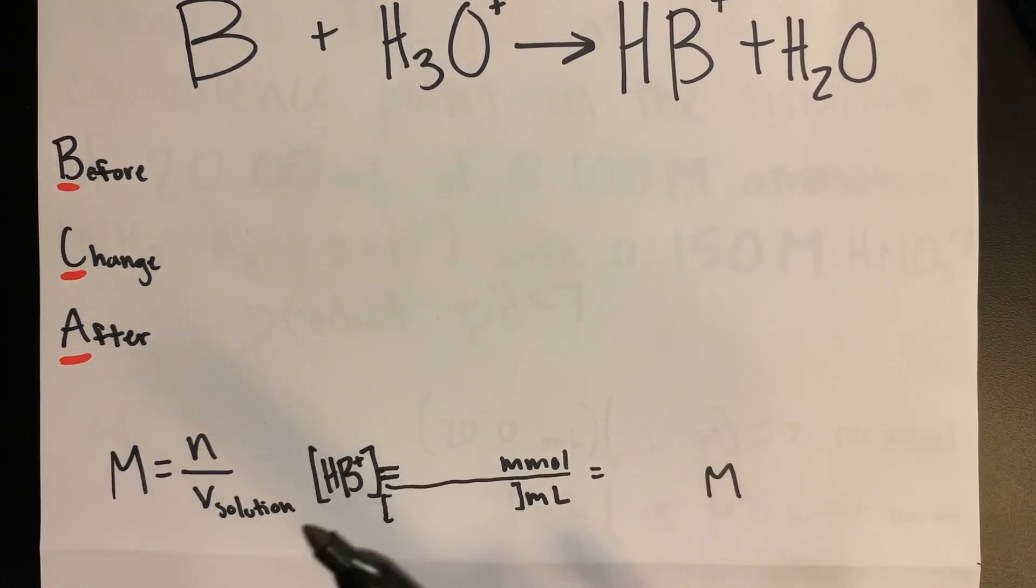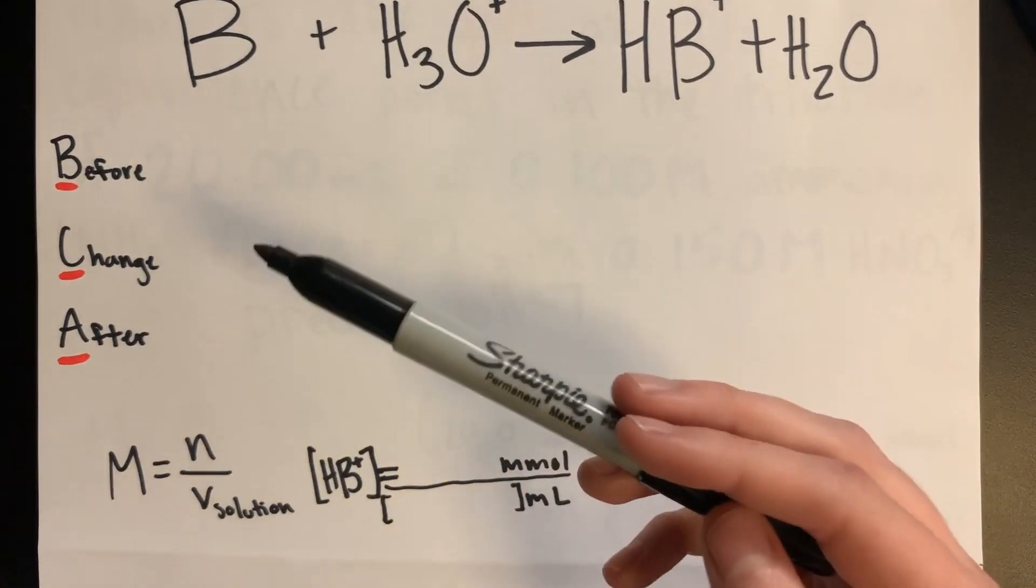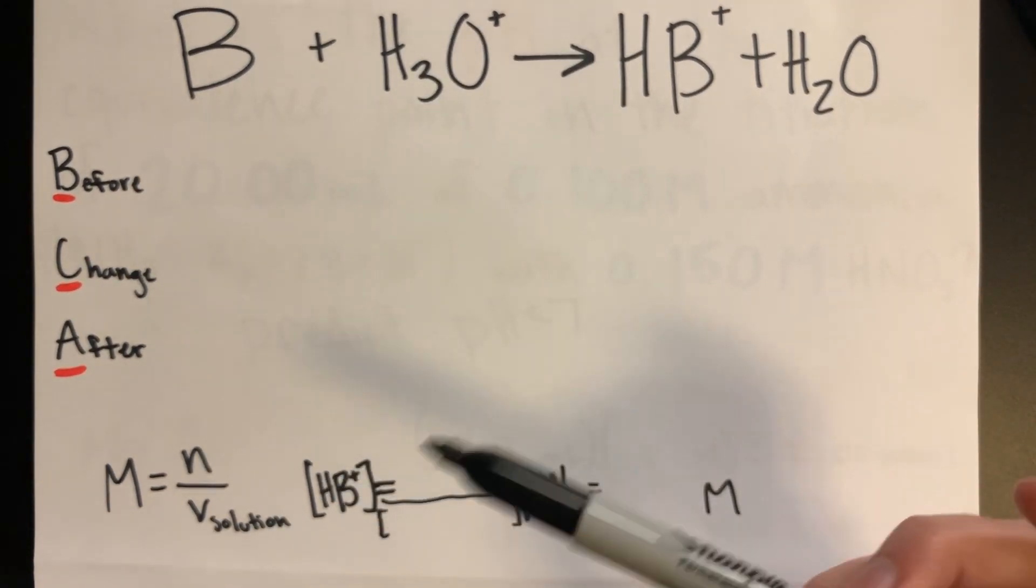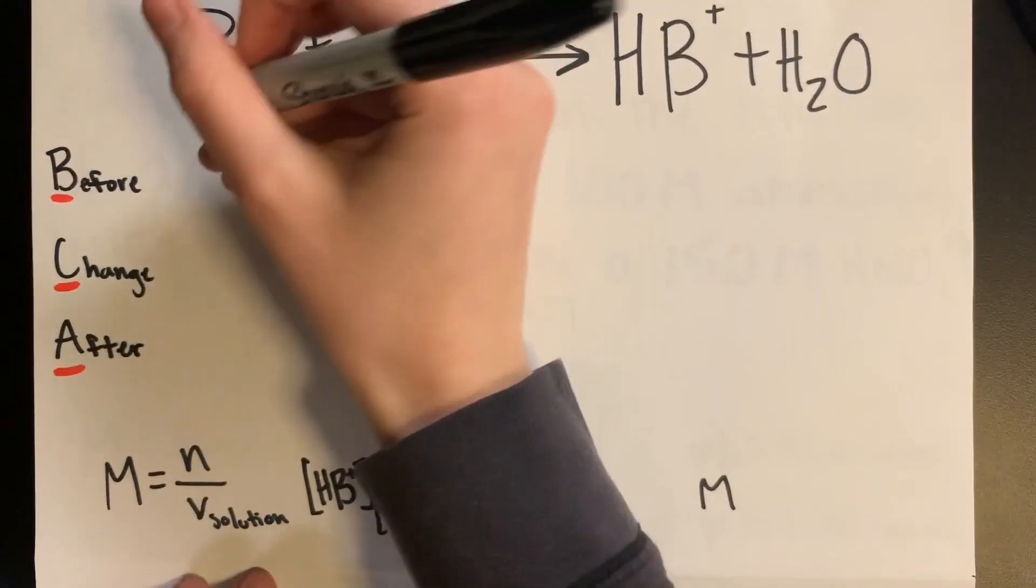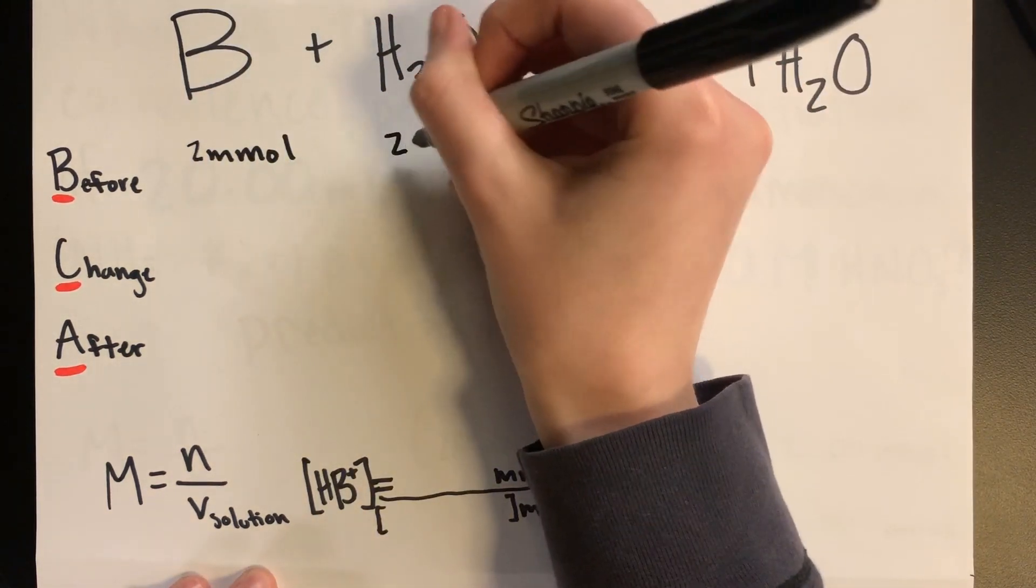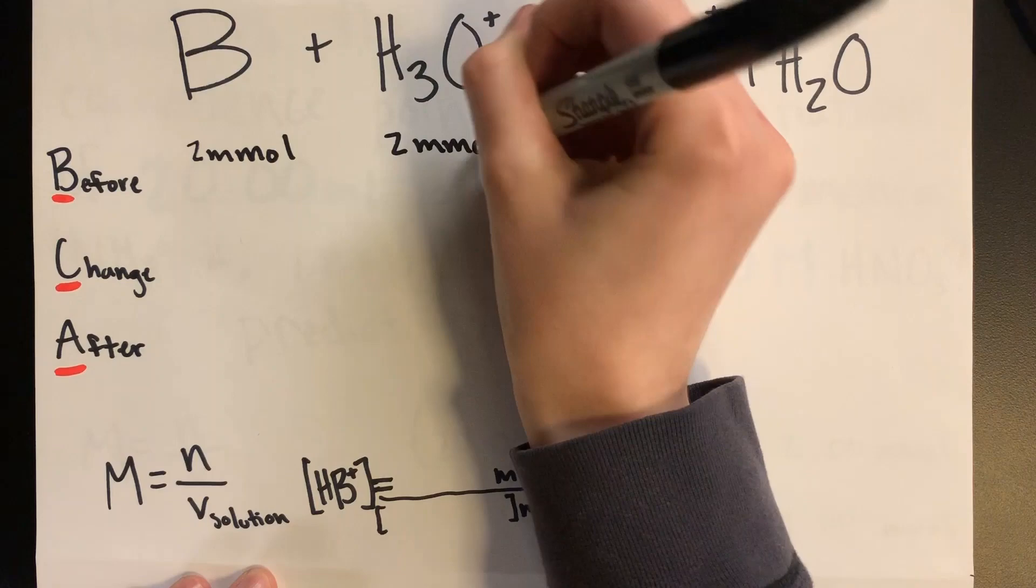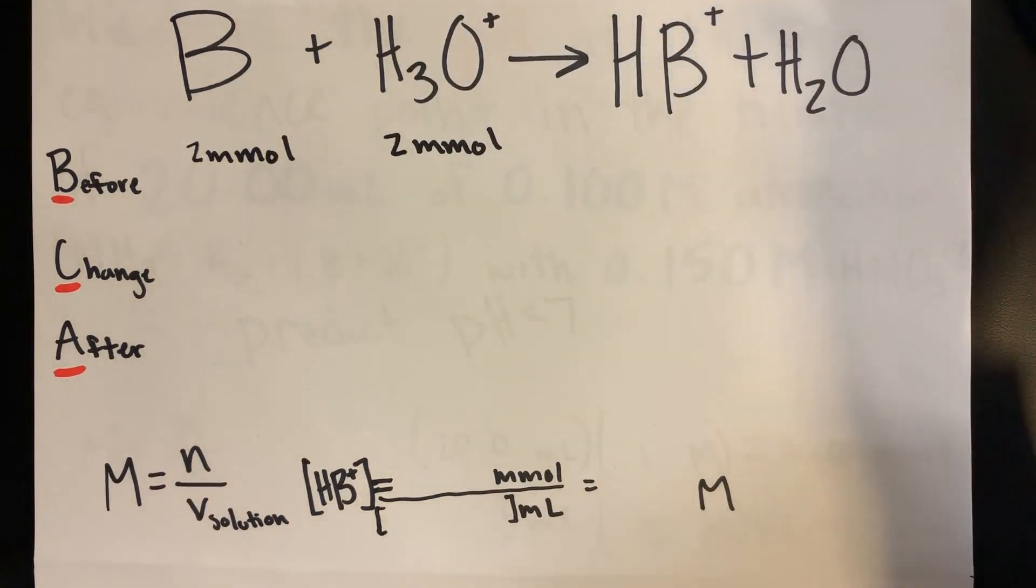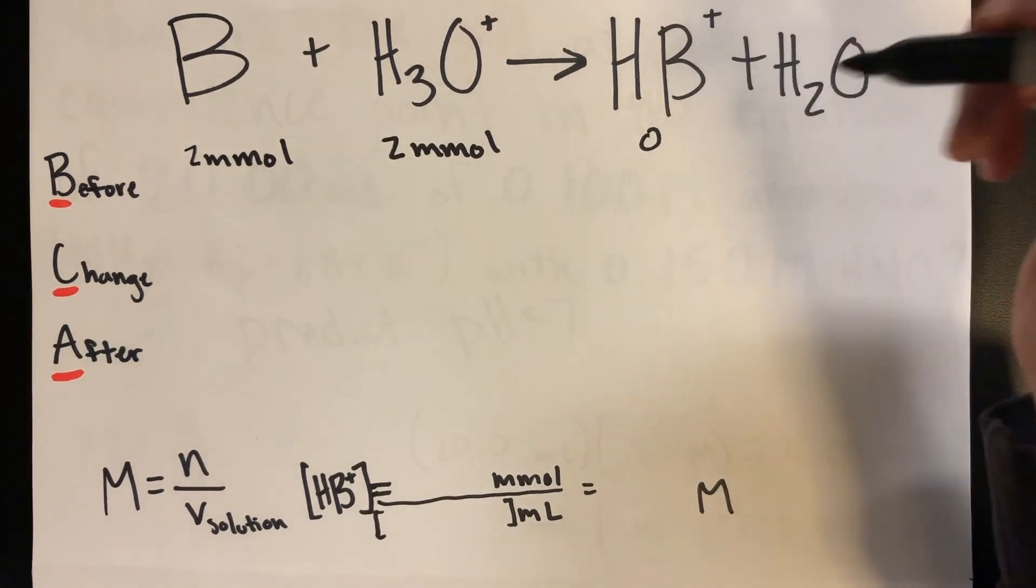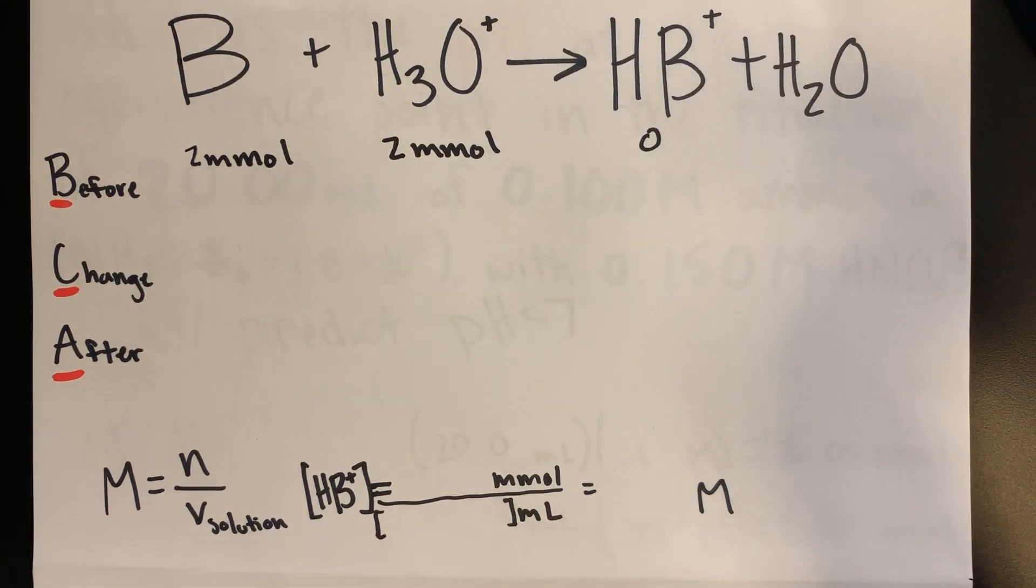We use the BCA table, which stands for before, change, and after. So before any of it has reacted, there are 2 millimoles of the weak base and 2 millimoles for the strong acid. But because nothing has reacted yet, there will be 0 for the conjugate acid.